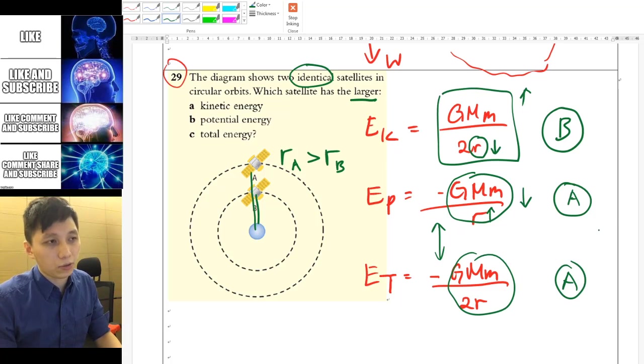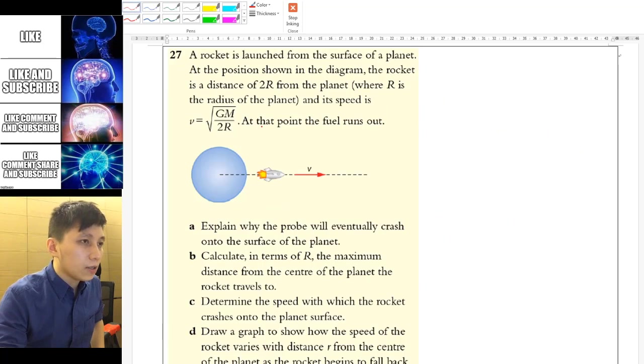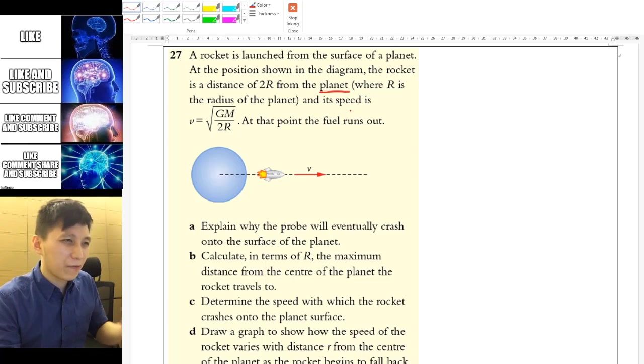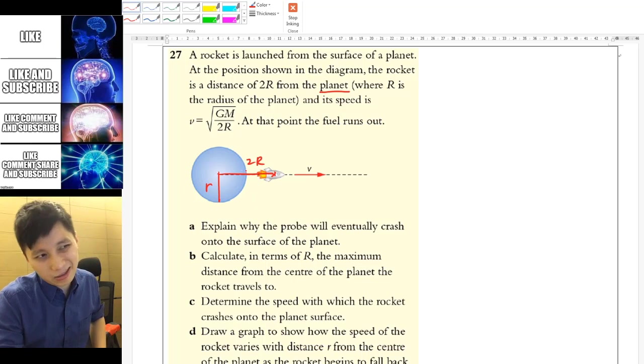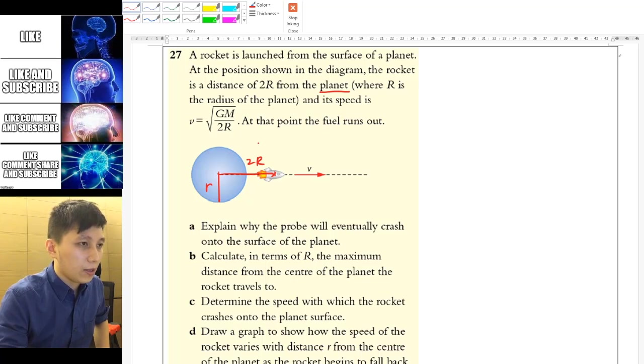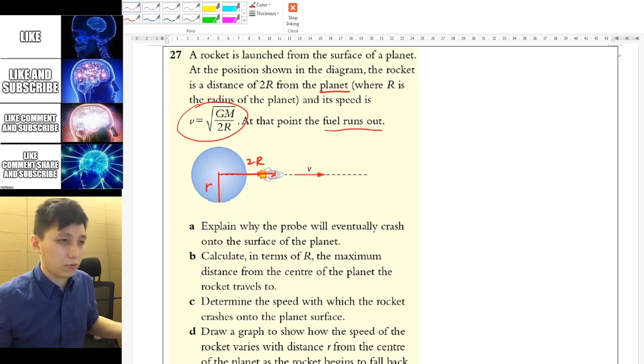Question 27. So it said there is a rocket launching from the surface of the planet. And now the rocket is 2R from the planet. Here I feel it's better if they specify planet center or surface. If they don't say surface, then I assume it will be center then. Then that means this is going to be 2R. While 1R obviously is the radius of the planet. So I guess the diagram kind of in scale. At this point, velocity will be this one and there's no more fuel. So it's a ballistic motion basically.